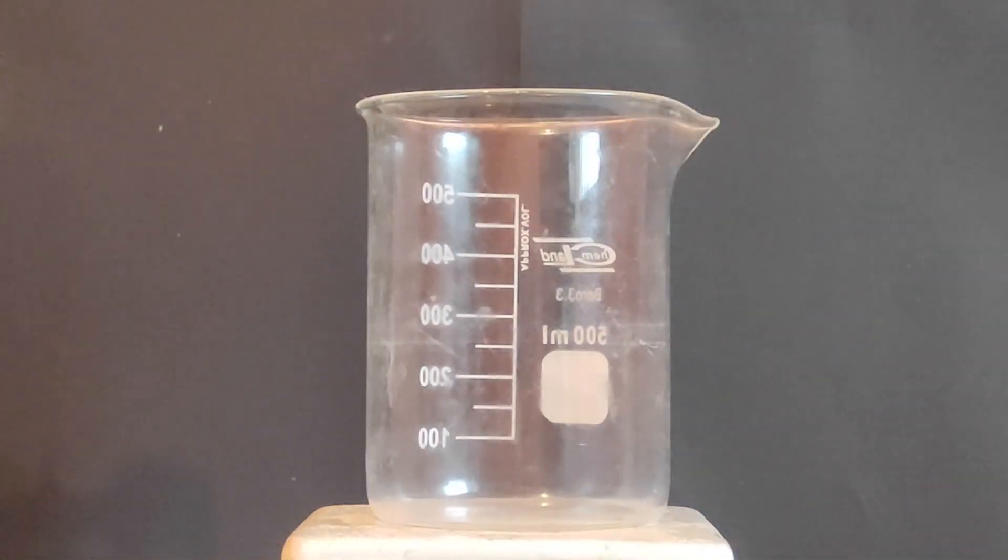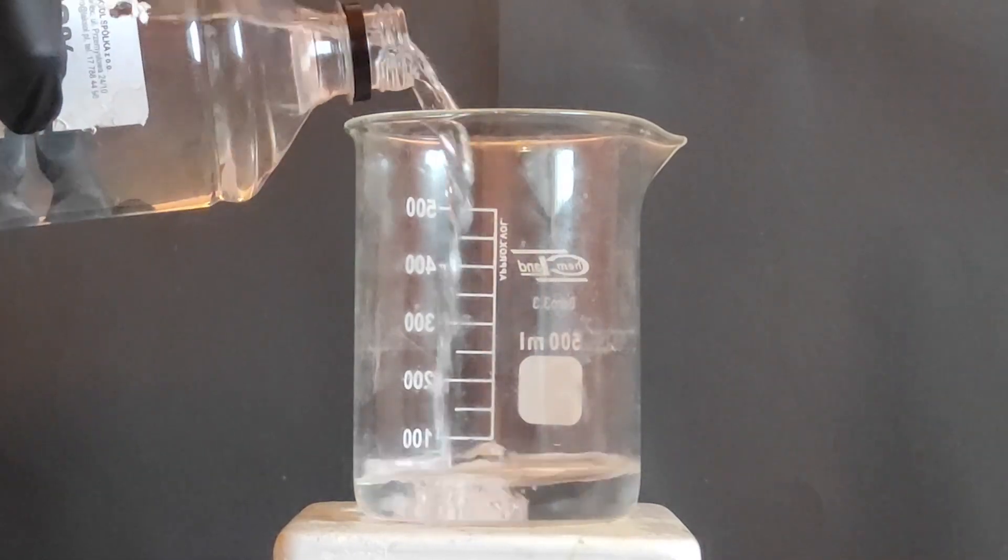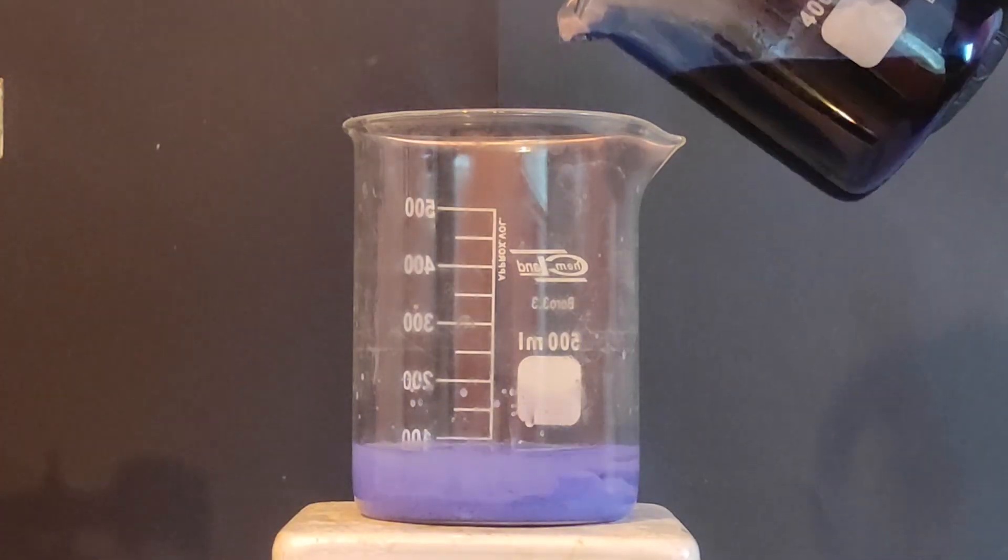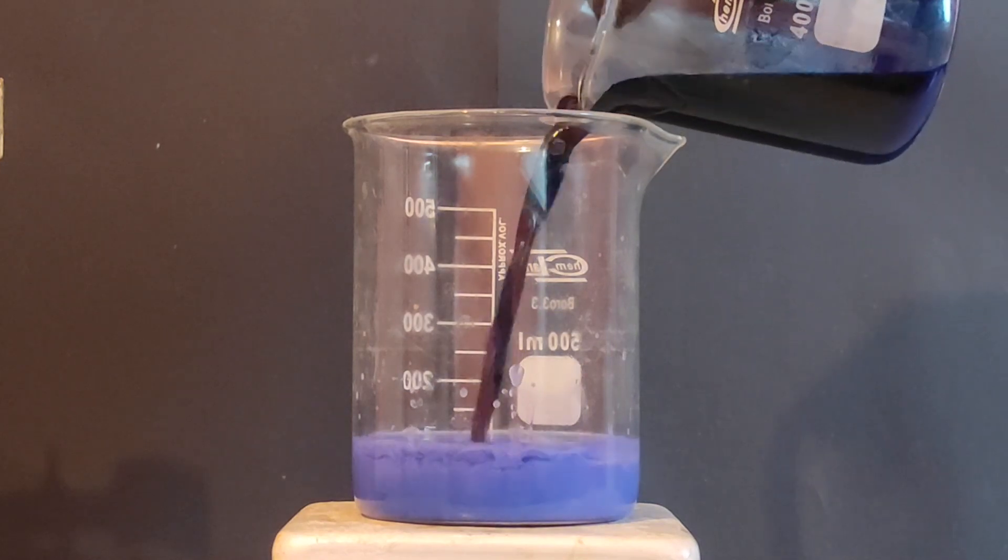So I've prepared a new beaker and I've added 100ml of 99% ethanol. As soon as I've added the original solution into the ethanol, a purple precipitate crashed out. And that's our explosive.